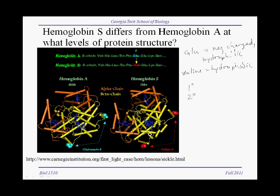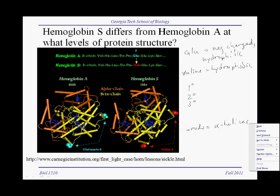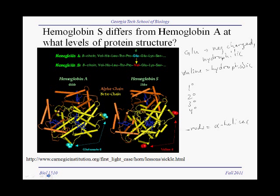If we look closely at the beta-globin chain, these rods represent alpha helices. So it looks like there is a change in the alpha helices, meaning there is a change in the secondary structure. There also appear to be subtle changes in the tertiary structure. And since the tetramers associate to form fibers in sickle cell, that is also a change in the quaternary structure. So all four levels of protein structure are affected by sickle cell disease.